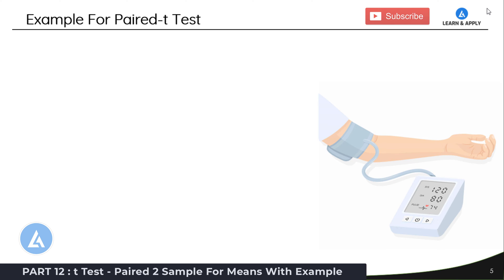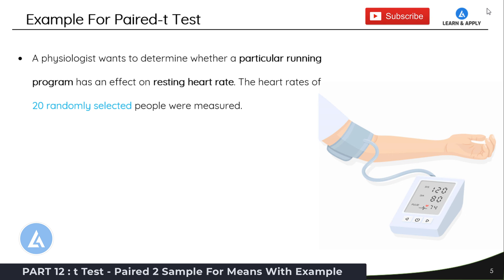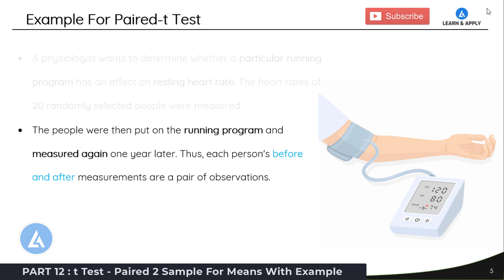This is an example for Paired t-Test. A physiologist wants to determine whether a particular running program has an effect on the resting heart rate. In this case, the heart rates of 20 randomly selected people were measured. The people were then put on the running program and measured again one year later. Thus, each person's before and after measurements are a pair of observations.